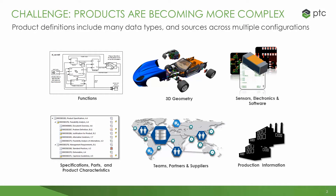Today's manufactured products are complex, and are becoming increasingly complex as products that we once thought of as purely mechanical devices have evolved. In many cases, smart connected products are complex systems of mechanical, electrical, electronic, embedded sensors, onboard software, and even with parts of the product functionality moving off the product and into the cloud.